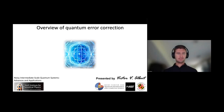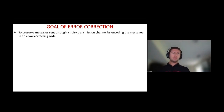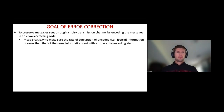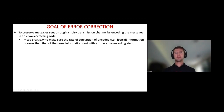Thanks, everyone. I'm excited to have the opportunity to give this talk via Zoom. Thank you for agreeing to still do it. Let's jump right in with the goal of error correction, classical or quantum. The goal is to preserve messages sent through a noisy transmission channel by encoding the messages in what's called an error correcting code, which I'll define later. More precisely, the goal is to make sure that the rate of corruption of encoded, or logical, information is lower than the rate of the same information sent without the extra encoding step.